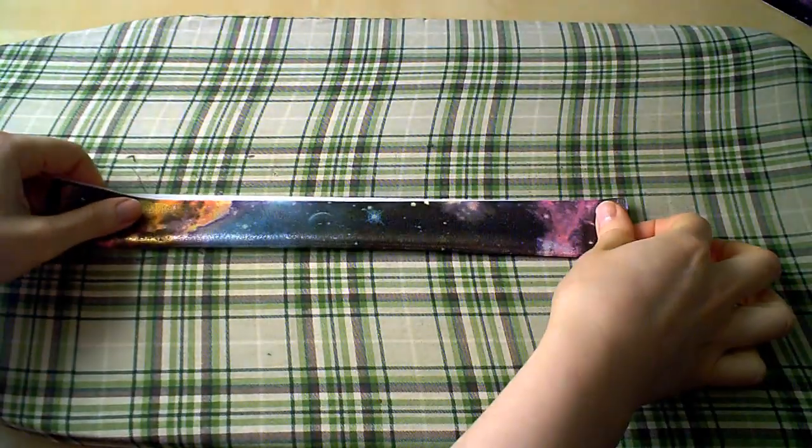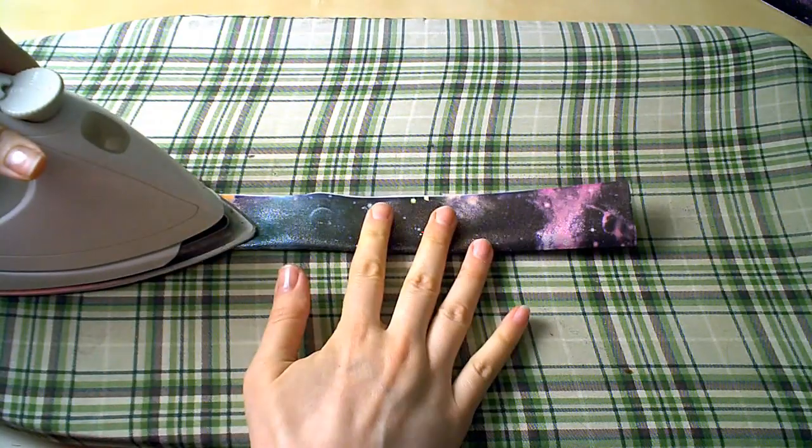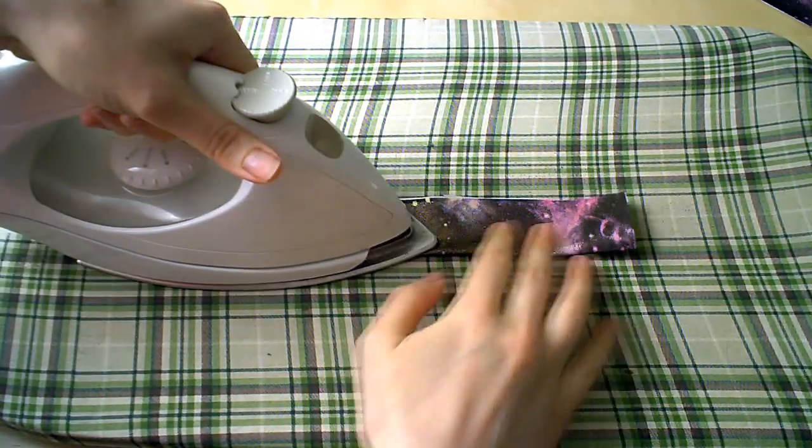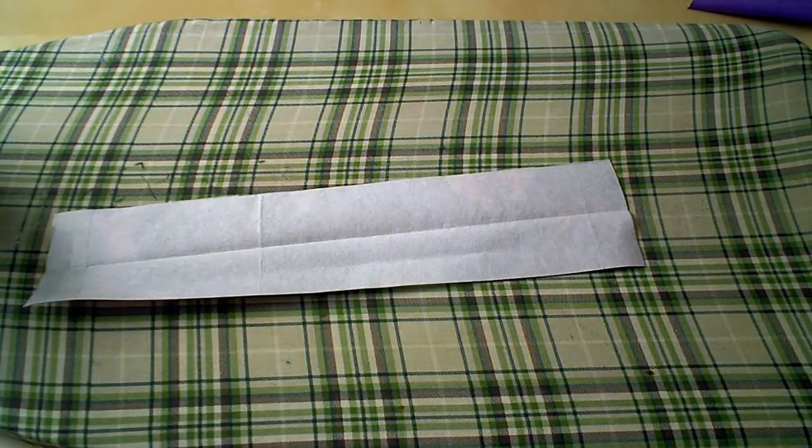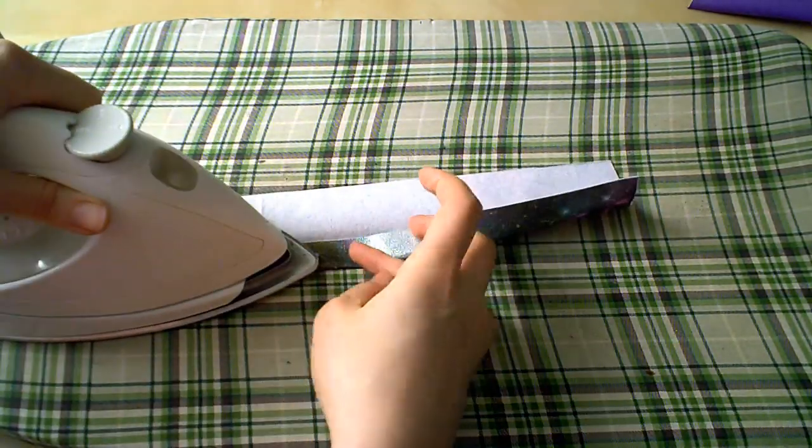Let's prepare our strap. I'm going to fold the strap in half, hot dog style, with the wrong sides together. Then I'll press it with an iron. Now we have a nice fold line right down the middle. I want to fold the raw edge in so it lines up with that center fold line. Then we press again.